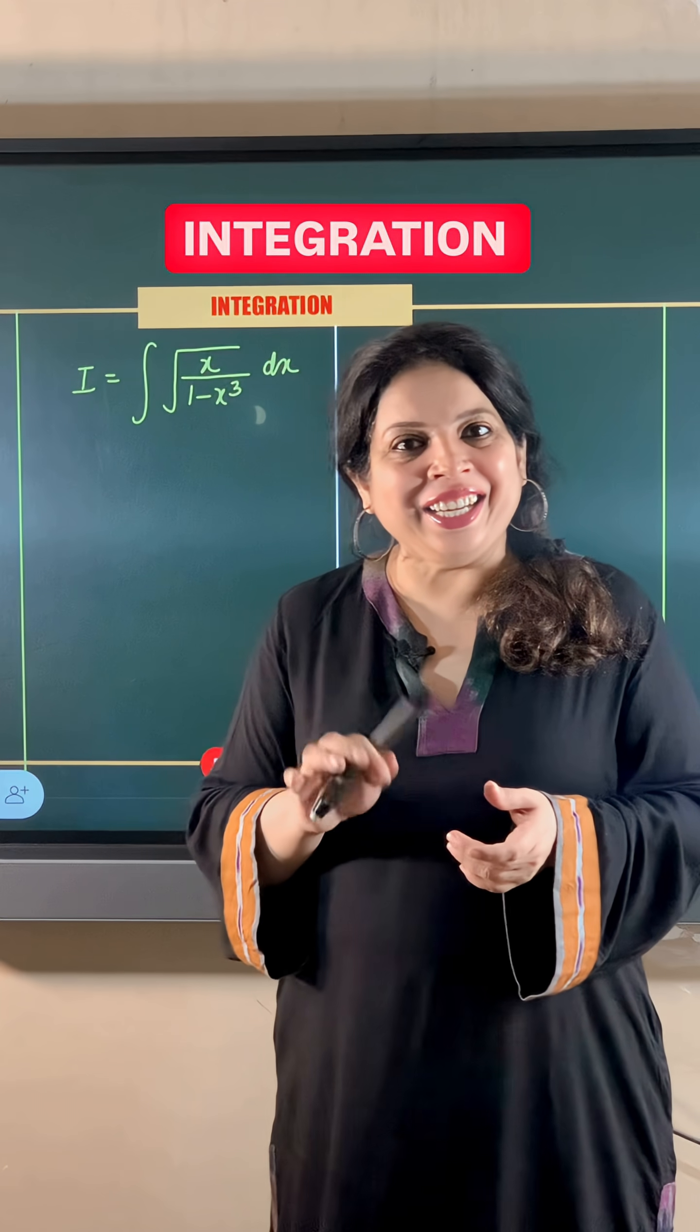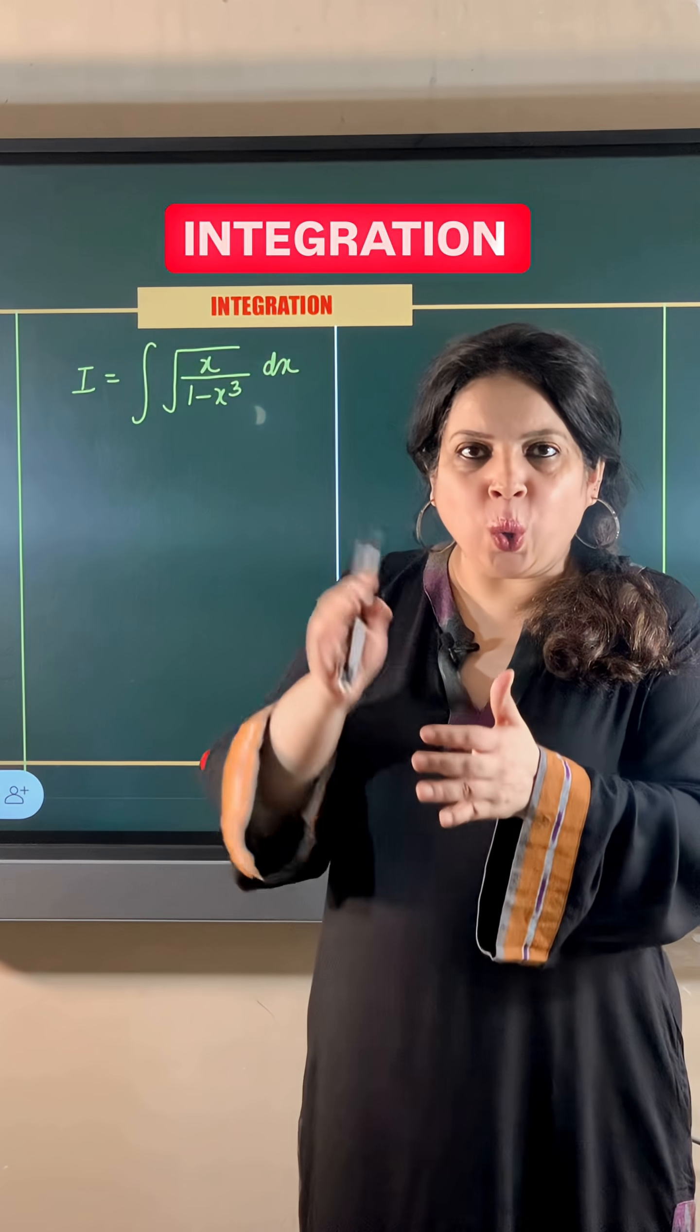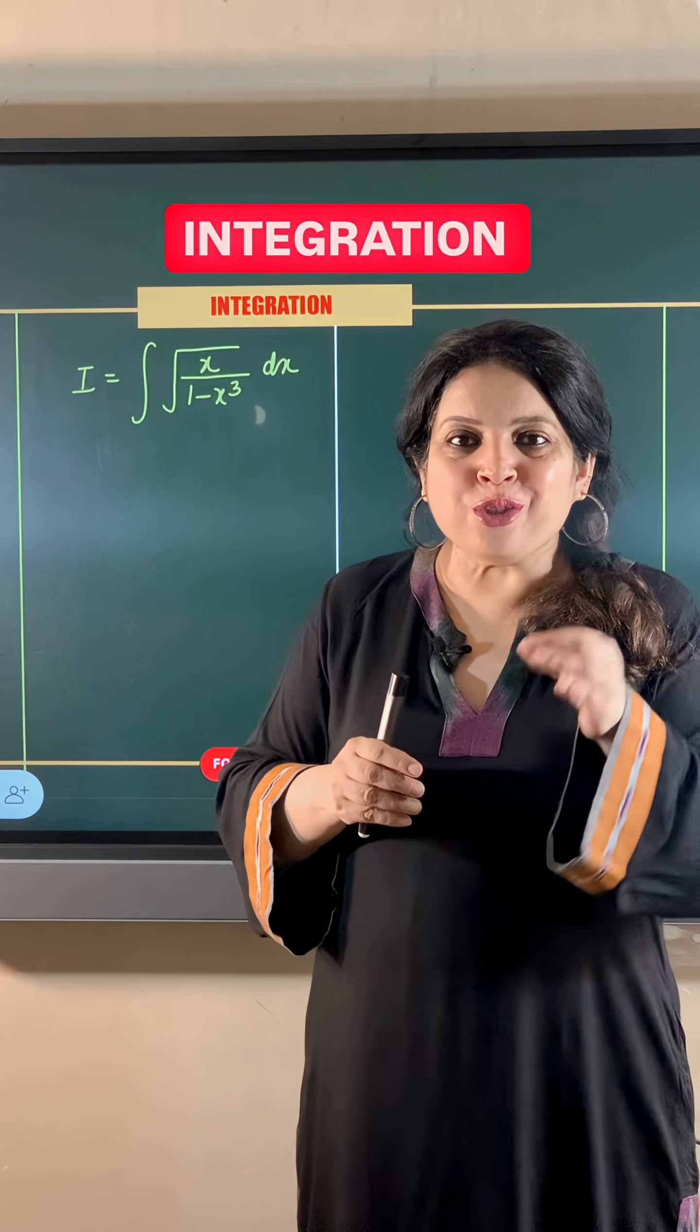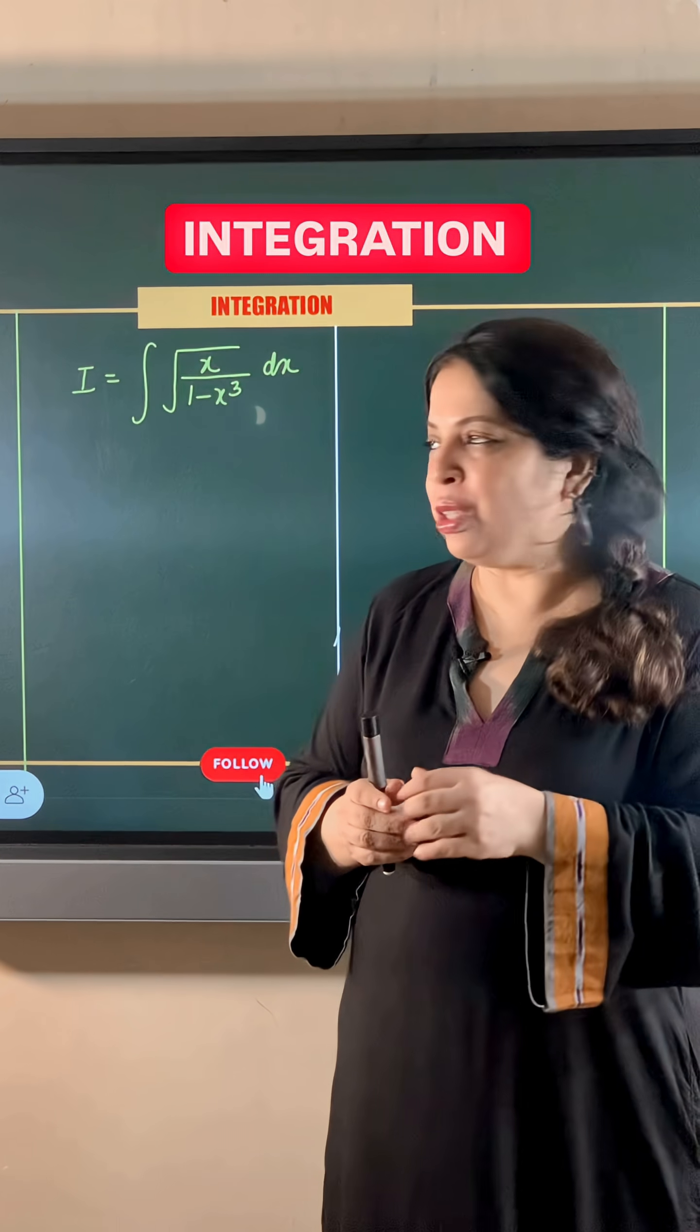In this integration question, the integrand is x over 1 minus x cube whole under the root. So little observation and some manipulation is required to solve this question.